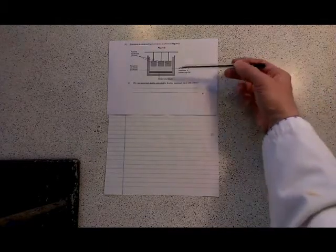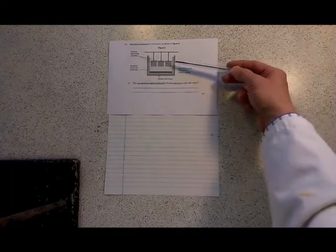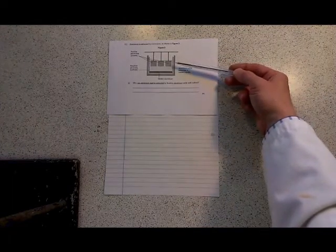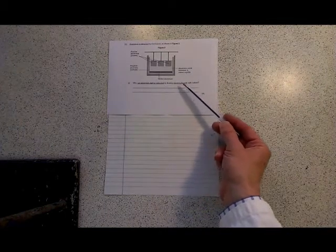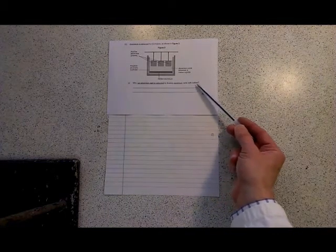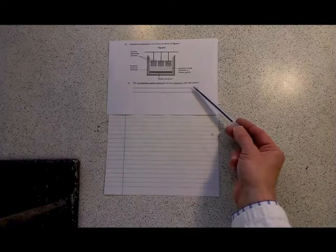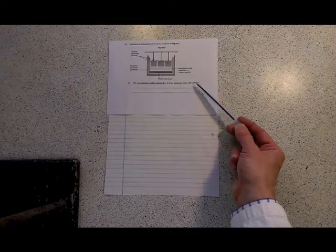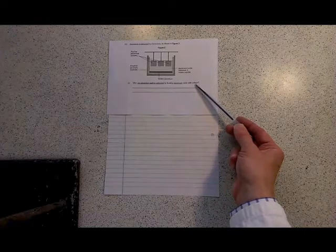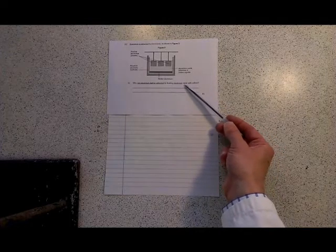The first question on this paper, which showed you an electrolysis setup for making aluminium, was why can aluminium not be extracted by heating aluminium oxide with carbon? This relates to the reactivity series. Aluminium is higher up than carbon, so carbon cannot displace aluminium from its oxide.